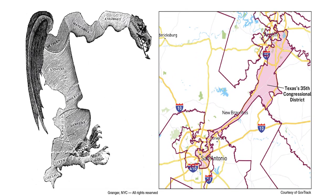Here is a picture on the left of the original gerrymandered district in Massachusetts. On the right, you'll see Texas's congressional 35th district and how it stretches from San Antonio up to Austin, generally following the main roads — that's where people tend to live. But it is gerrymandered.